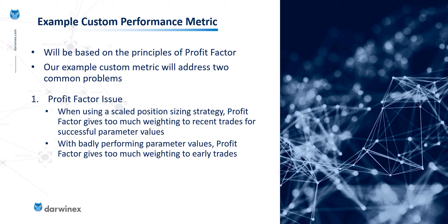Likewise, if you have a poorly performing set of parameters where equity actually reduces, profit factor gives the trades early on — with the largest position sizes — a much bigger weighting than the trades at the end of the test period, by which time the position size has reduced. This gives you a skewed effect where each trade has a different impact on the eventual profit factor calculated.